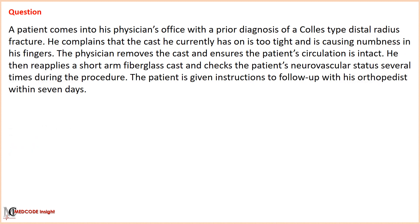Practice Question 4: A patient comes into his physician's office with a prior diagnosis of Colles-type distal radius fracture. He complains that the cast he currently has is too tight and is causing numbness in his fingers. The physician removes the cast, ensures circulation is intact, then reapplies a short arm fiberglass cast and checks the patient's neurovascular status several times. The patient is given instructions to follow up with his orthopedist within 7 days. Options: A — code 25600 with modifier 77; B — codes 29705 and 29075; C — code 25600 with modifier 52; D — code 29075.